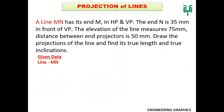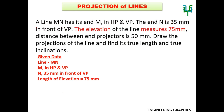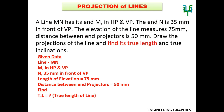The given data: line is MN; M is in HP and VP; N is 35mm in front of VP; length of elevation is 75mm; distance between projectors is 50mm. We have to find out the true length TL, inclination to HP theta, and inclination of the line to VP phi.